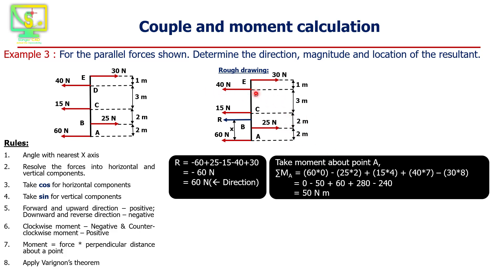The 40 newton force will also rotate the system in the counterclockwise direction, so it is positive, and this 40 newton force is at a distance of 7 meters from point A. The 30 newton force will rotate the system in the clockwise direction, so it is negative, and this 30 newton force is at a distance of 8 meters from point A. This gives the total moment value of 50 newton meters.